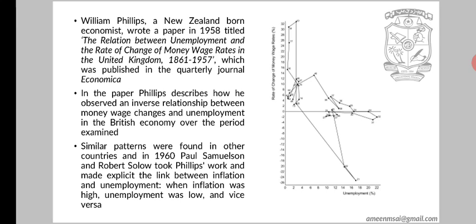A.W. Phillips was a New Zealand-born economist who wrote a paper in 1958 titled 'The Relation Between Unemployment and the Rate of Change of Money Wage Rates in the United Kingdom, 1861 to 1957,' published in the Quarterly Journal Economica. In the paper, Phillips describes how he observed an inverse relationship between money wage changes and unemployment in the British economy over the period examined.